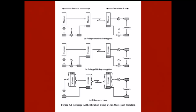A technique that uses a hash function but no encryption for message authentication is also possible. Because the secret value itself is not sent, it is not possible for an attacker to modify an intercepted message and generate a false one. There is also a variation called HMAC, which is used for IP security and will be discussed later.